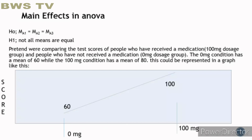Main effects in ANOVA. The null hypothesis is that all A levels are equal, and the alternative hypothesis is that not all means are equal. For example, pretend we're comparing the test scores of people who received a medication at 100 mg dosage and people who did not receive a medication at 0 mg dosage. The 0 mg condition has a mean of 60 while the 100 mg condition has a mean of 80. This can be represented in a graph like this.